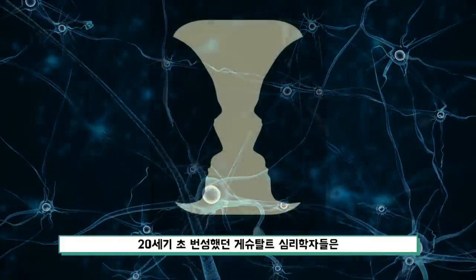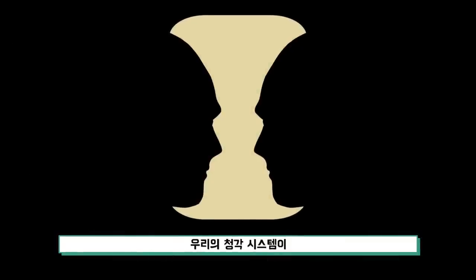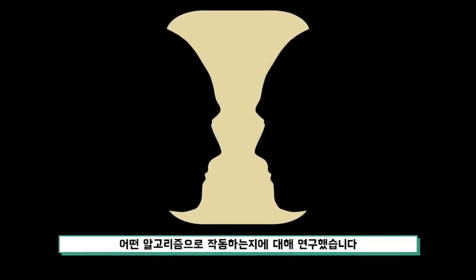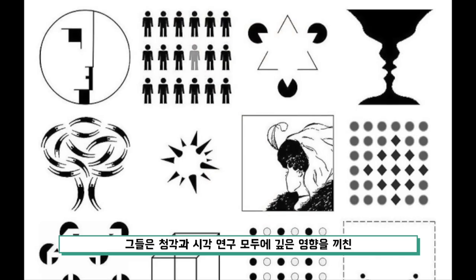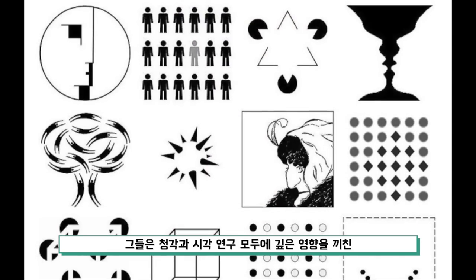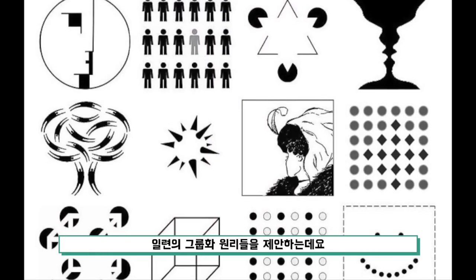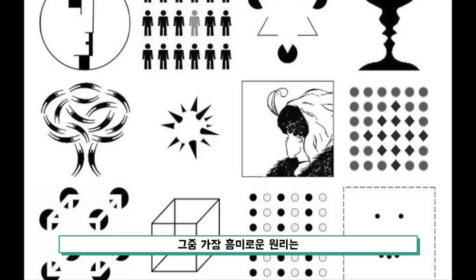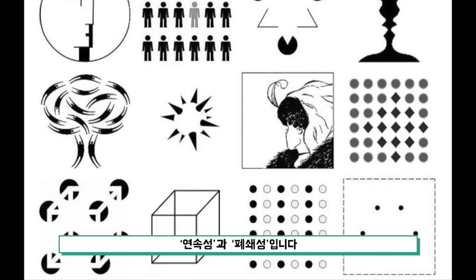20세기 초 번성했던 게슈탈트 심리학자들은 우리의 청각 시스템이 어떤 알고리즘으로 작동하는지에 대해 연구했습니다. 그들은 청각과 시각 연구 모두에 깊은 영향을 끼친 일련의 그룹화 원리들을 제안하는데요. 그 중 가장 흥미로운 원리는 연속성과 폐쇄성입니다.